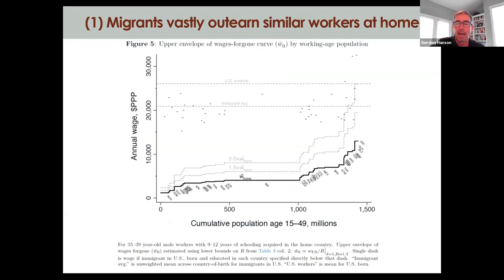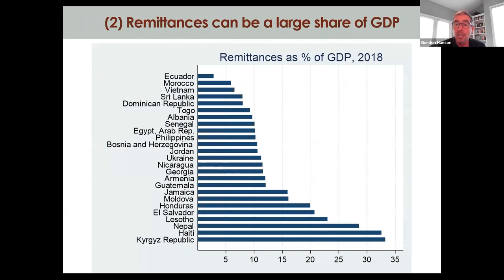A substantial share of those income gains are shared with members at home. If we look at high remitting countries, we see places where remittances are between 10 and 20 percent of GDP. What the IMF and the World Bank are forecasting for this year is a reduction in global remittances of around 20 percent. So if you're a Honduras or an El Salvador, this is going to be a very severe shock to your economy.